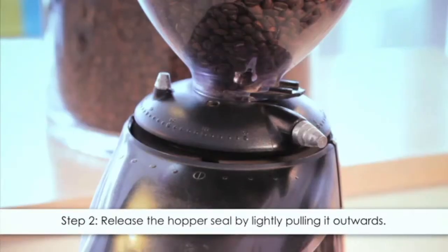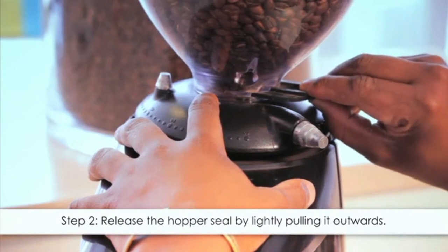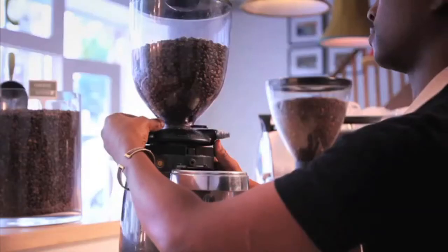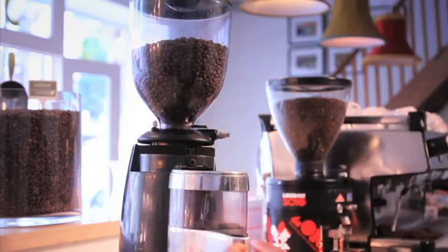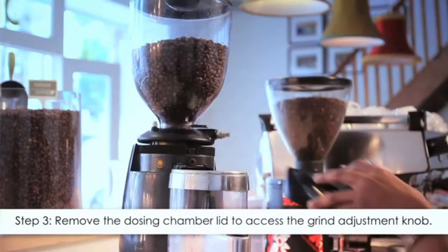Step two: release the hopper seal or bean gate by lightly pulling outwards until it catches and stops. Secure the hopper to the grinder by fastening or tightening the hopper lock. Step three: remove the dosing chamber lid to access the grind adjustment knob. A common grinder will be adjusted in the following way.